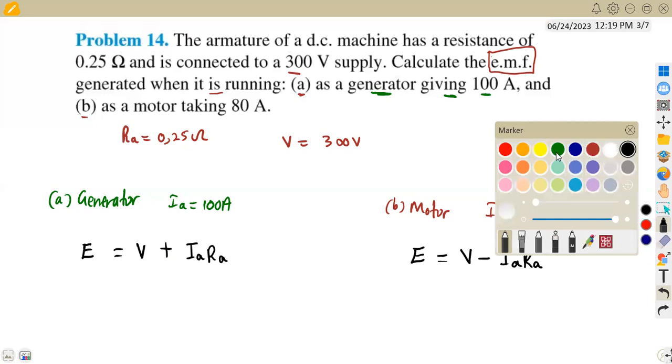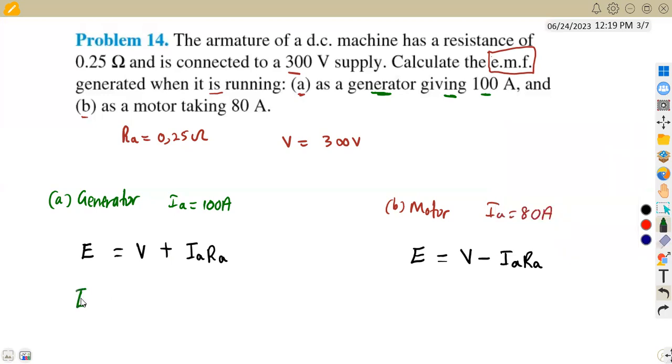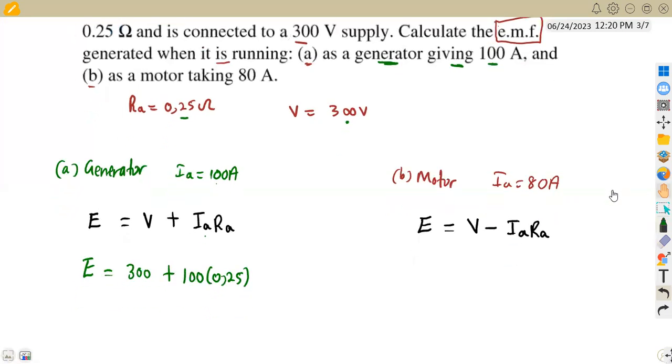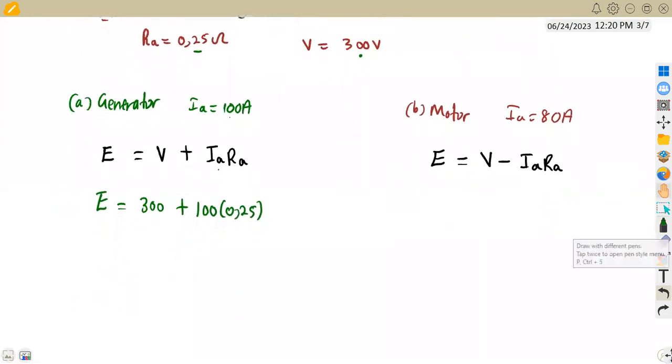So that is the difference we only have between these two. So meaning here, we are simply going to substitute what we are given. Our generated EMF is going to be taken from our terminal voltage, which is 300 plus the armature current as we're working as a generator, which is 100 times the armature resistance in this case of 0.25.